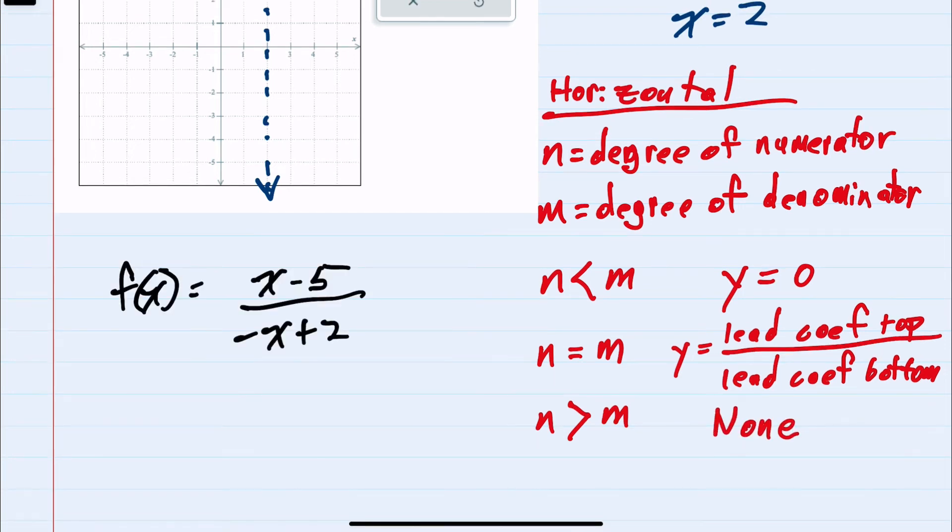Looking back at our function, the degree of the top is 1, and the degree of the bottom is also 1, so they are the same. Our asymptote will be y equals the leading coefficient of the top, which here is 1, over the leading coefficient of the bottom, which here is negative 1. So y equals negative 1 is our horizontal asymptote.